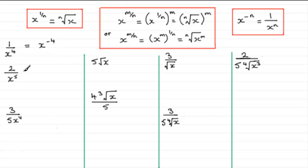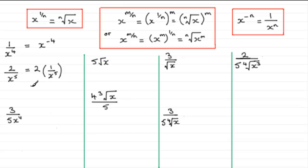In the next example, I've introduced a number on top. We think of this as 2 multiplied by 1 over x to the power 5. Now 1 over x to the power 5 is the same as x to the power minus 5. So what we've got here is 2 multiplied by x to the power minus 5, giving us 2x to the minus 5.